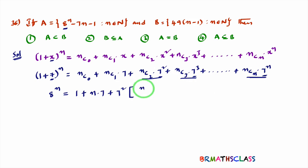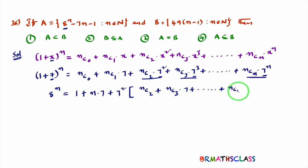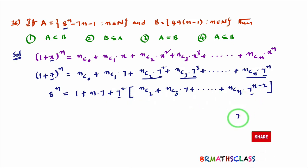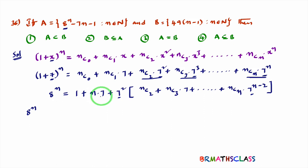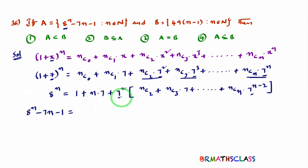Taking 7 square common from the remaining terms, we get nc2 plus nc3 into 7 plus and so on plus ncn into 7 power n minus 2. You can verify: 7 square multiplied by 7 power n minus 2 gives 7 power n. Now take 7n and 1 to the left hand side. So 8 power n minus 7n minus 1 equals 7 square into the bracketed expression.